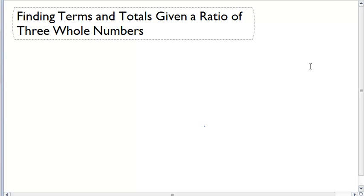Finding terms and totals given a ratio of three whole numbers. In the word problems that follow, we're often going to be given a ratio of three numbers. For example, 4 to 3 to 1.